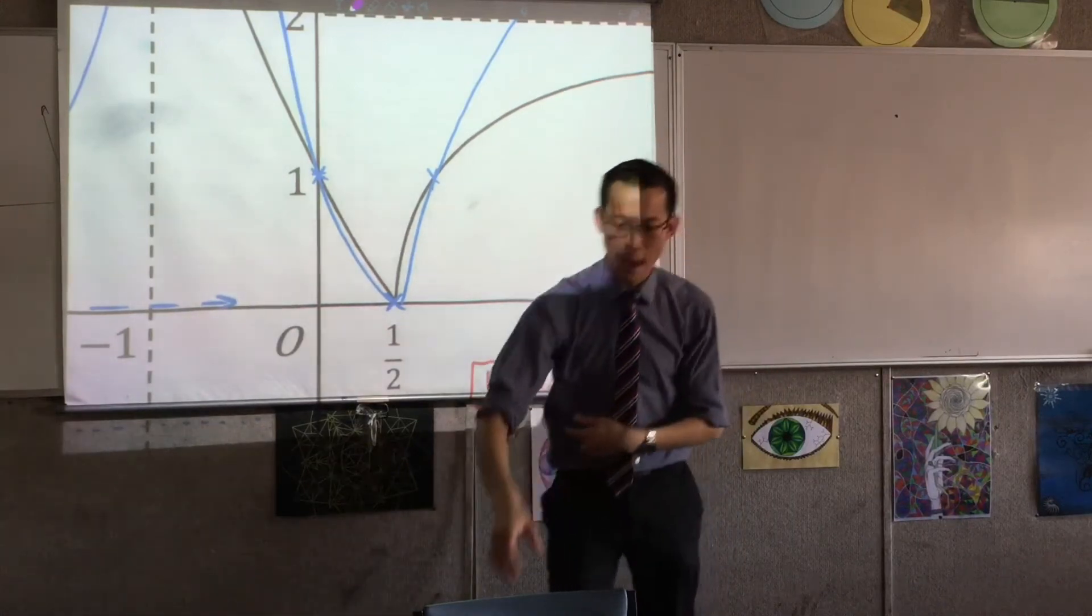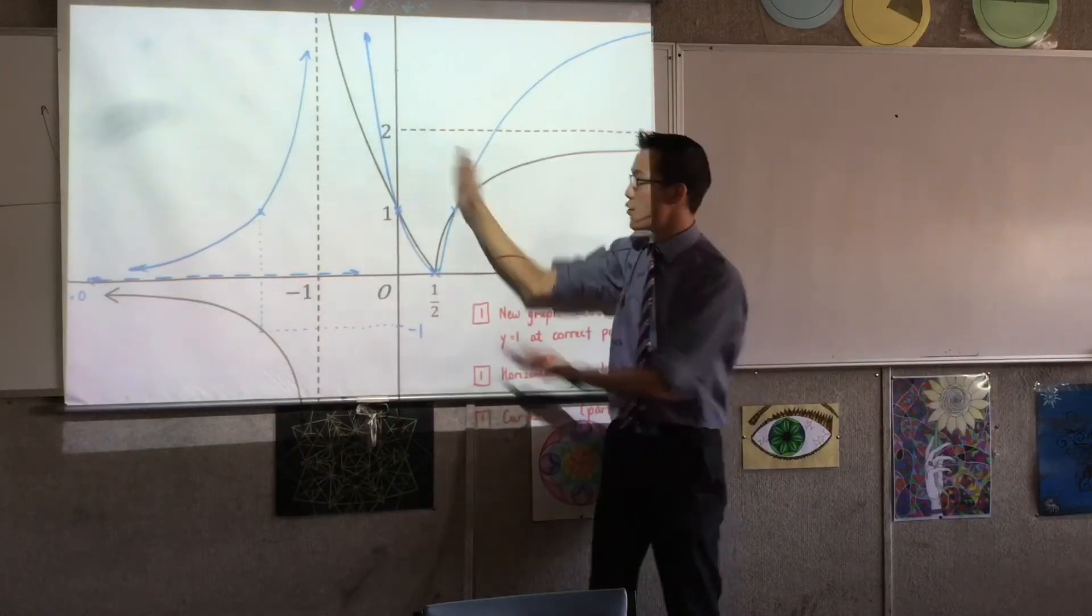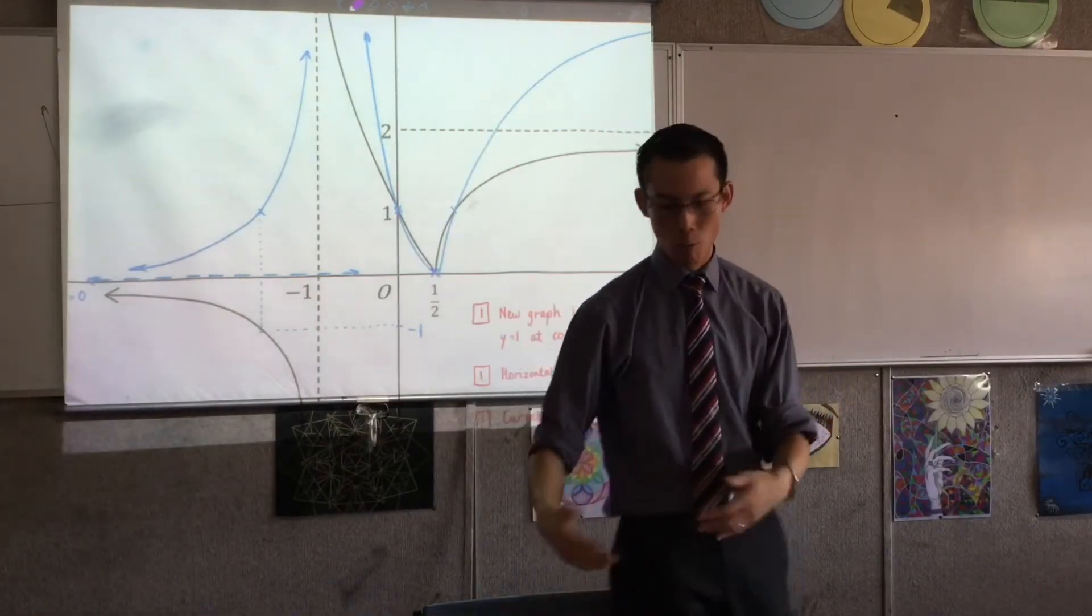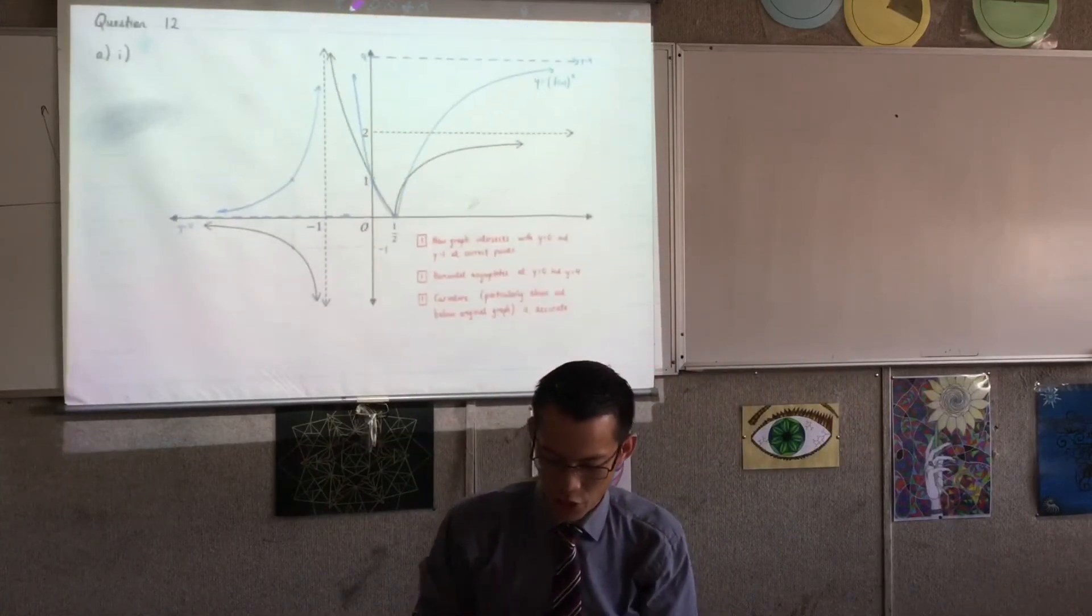Obviously, you've got the exact reverse happening everywhere else, right? All these parts above here, you've got to be above because you're becoming a more extreme version of whatever value you are above one, okay? That was the last feature I was looking for.